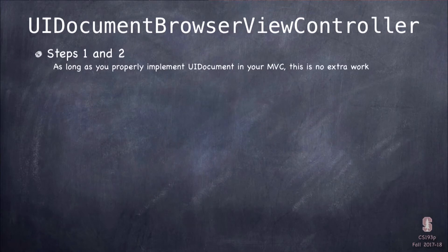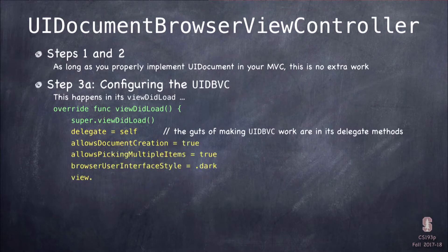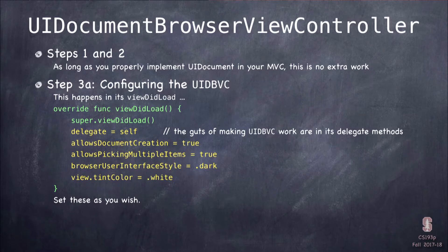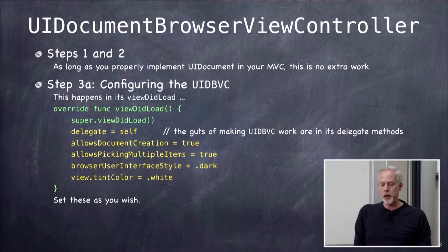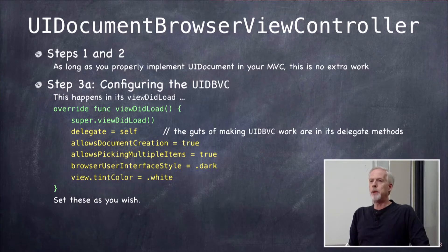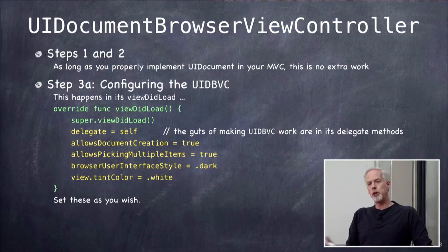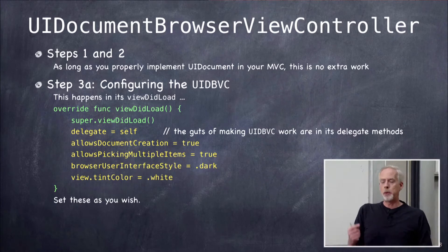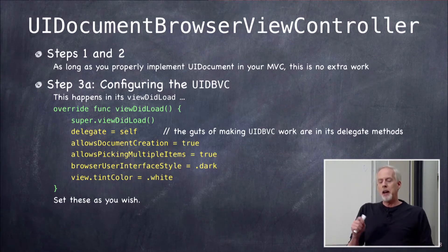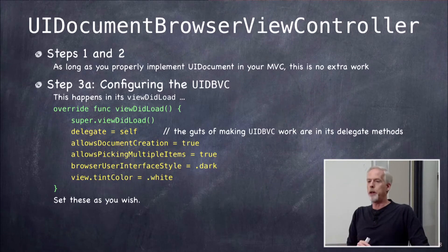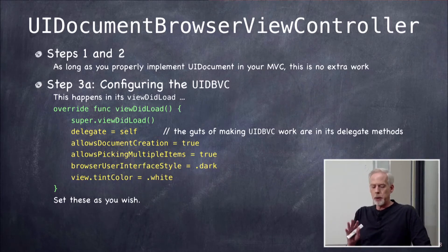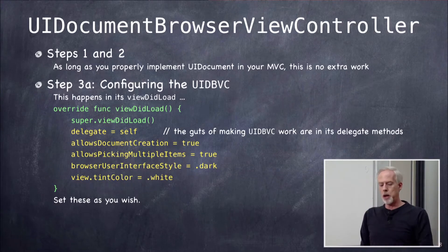In viewDidLoad of the UIDocumentBrowserViewController subclass, you must set it as its own delegate because it implements opening-file methods using its own delegate methods. Then you can set allowsDocumentCreation to true if you want users to create documents, allowsPickingMultipleItems if you allow selecting multiple documents at once—EmojiArt can't do that since it only shows one document at a time. You can also tweak the tint colors to match your document controller's look.